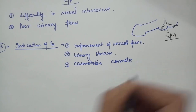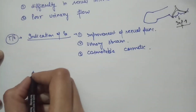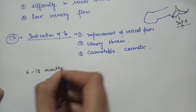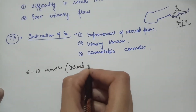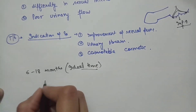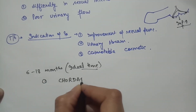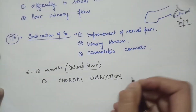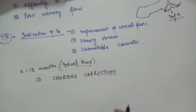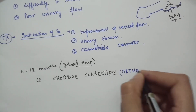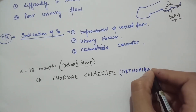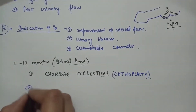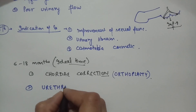The ideal time for surgery is 6 to 18 months of age. First, chordee correction is done — this process is known as orthoplasty. Then urethroplasty is performed.